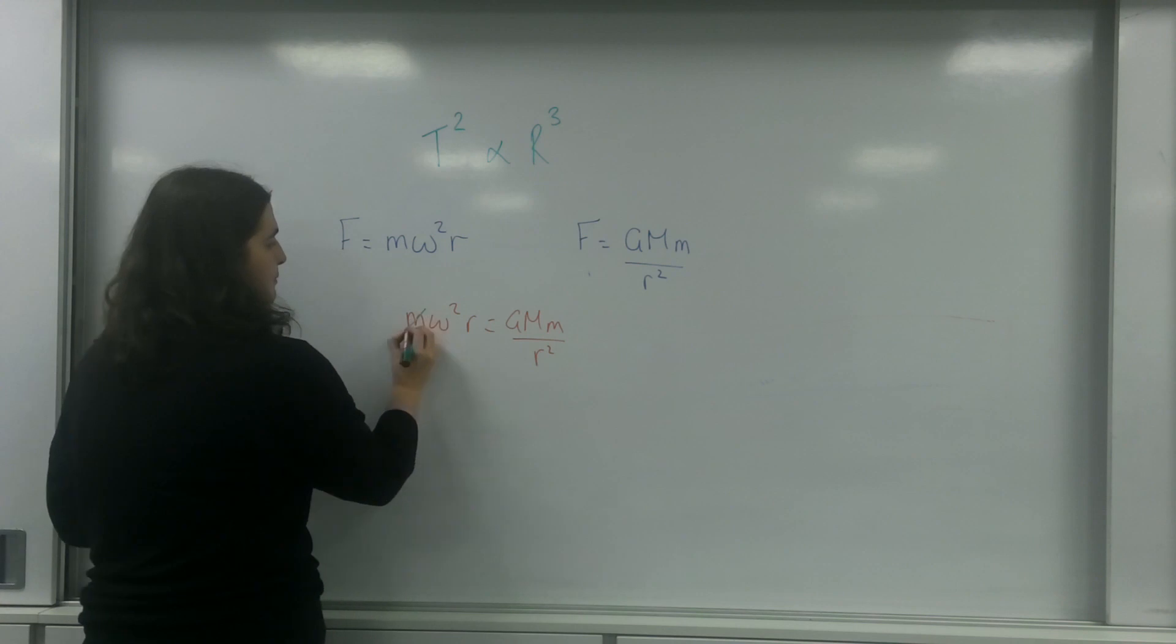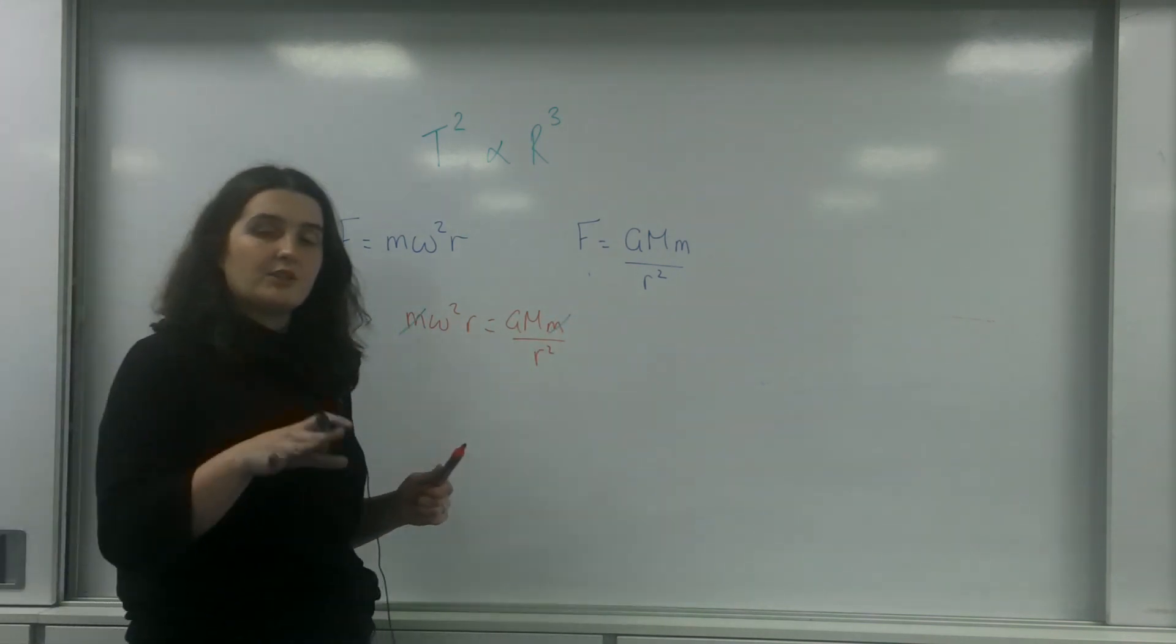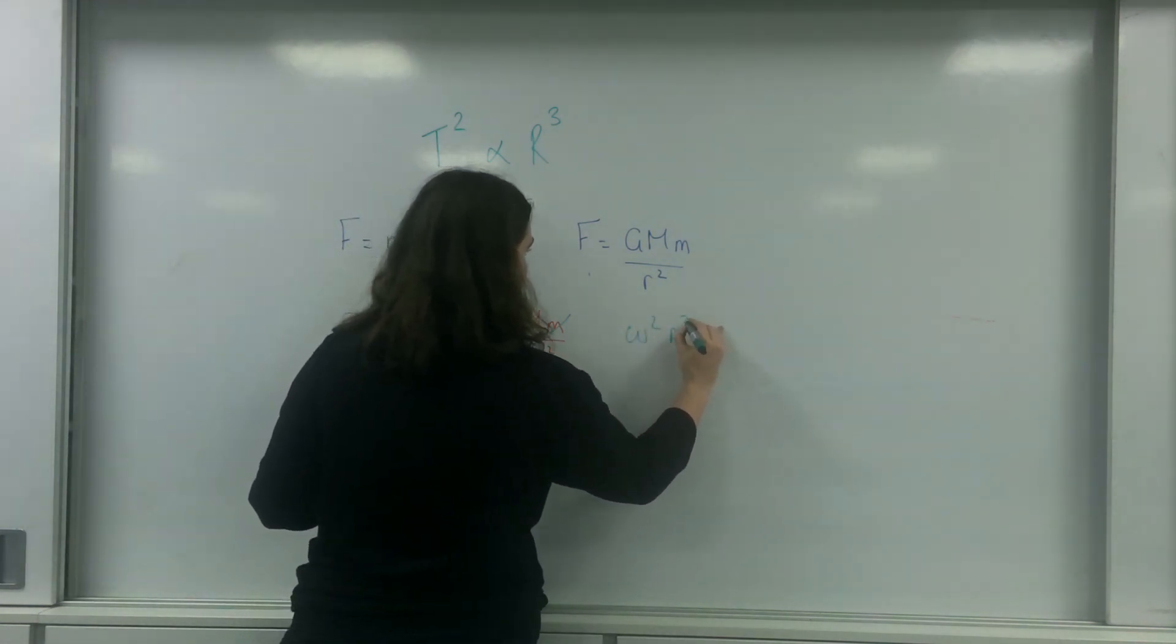So m omega squared r equals G big M little m over r squared. As you can already see, the little m's cancel out, so this is important. The mass of the actual thing that's orbiting doesn't actually matter. And I end up with omega squared r cubed equals G M.